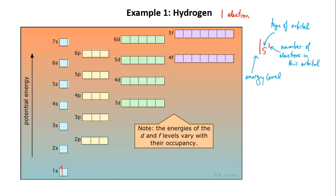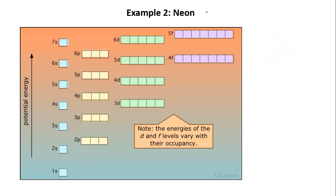Next let's try neon. Neon is the tenth element on the periodic table so it has 10 electrons. So we start at the bottom and we fill up the orbitals until we've got 10 electrons. As with hydrogen the first electron is represented by an arrow. The second electron in the same orbital is represented by an arrow in the opposite direction going down.